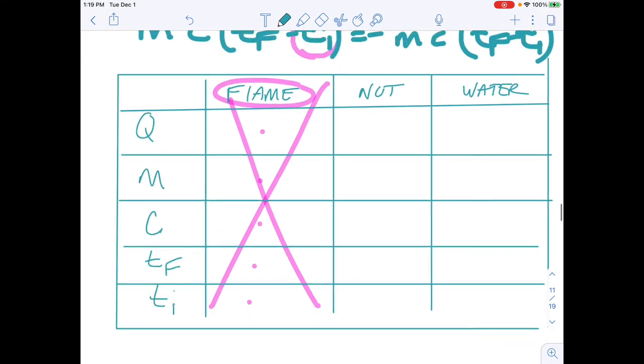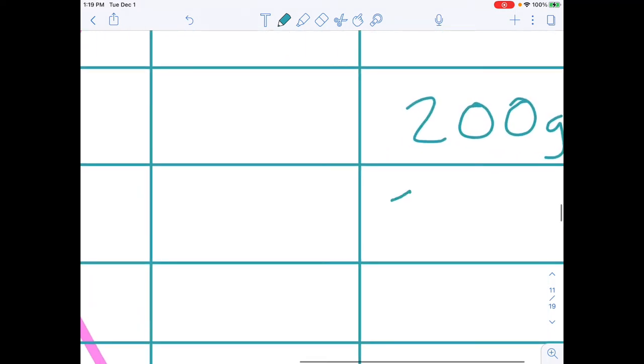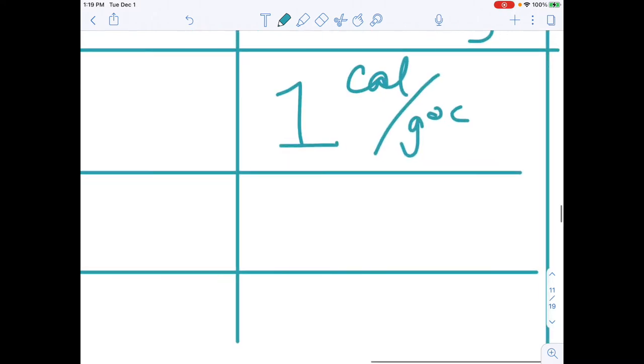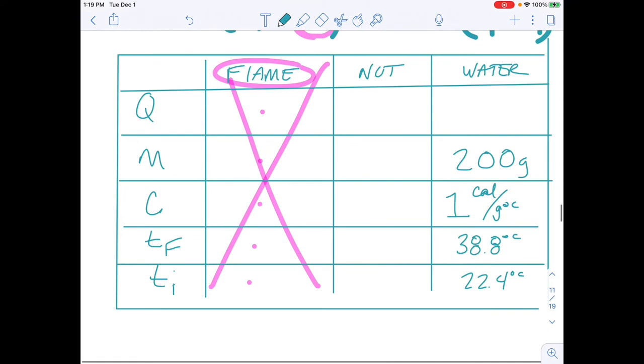Some of the information we were able to gather from this lab, the water, we had 200 grams of water. 200 milliliters equal 200 grams. We know that water has a specific heat of one calorie per gram degree Celsius. And we saw that the final temperature of the water was 38.8 degrees Celsius and the initial temperature of the water was 22.4.